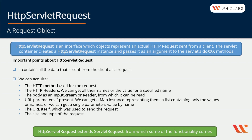The HttpServletRequest provided to the respective DoX method contains all the data sent from the client as a request. We can acquire the HTTP method used for the request, the HTTP headers, and get all their names or the value for a specified name. We can get the body as an input stream or reader. We can read the URL parameters if present, get a map instance representing them, a list containing only the values or names, or get a single parameter value by name. We can also get the URL used to send the request, and the size and type of the request.